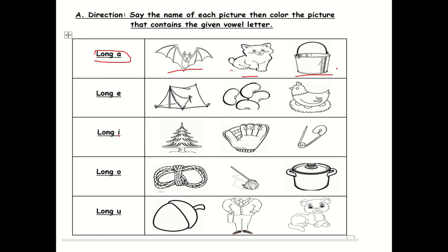Which of these pictures has the long A sound — is it the bat, cat, or pail? You have to color your answer. Next, long E sound: tent, bean, or hen? Which of these pictures has the long E sound? Next we have the long I sound. Which picture has the long I sound — is it pine, meat, or pin?